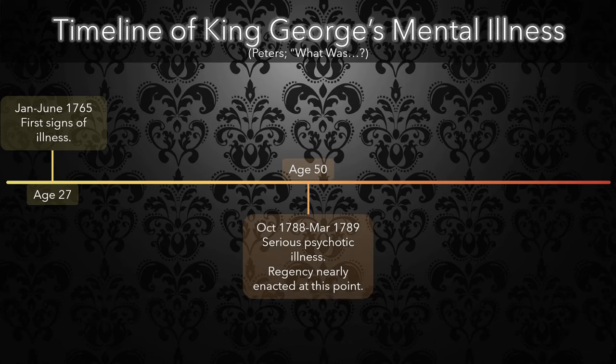In October 1788, he relapsed severely. He suffered from persistent acute mania. His symptoms included talking incessantly until he foamed at the mouth, and he also occasionally suffered from convulsions, which we would probably describe as seizures today. King George was sent to Cheltenham Spa to recover, but his symptoms worsened. In February of 1789, a Regency Bill was introduced in Parliament, but King George suddenly recovered before it passed.